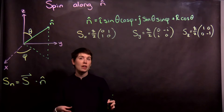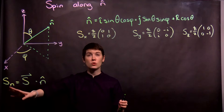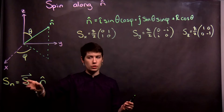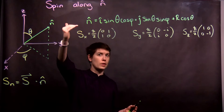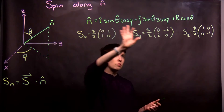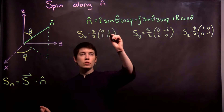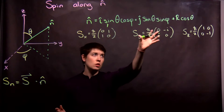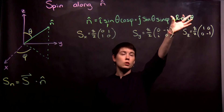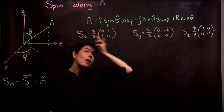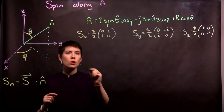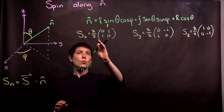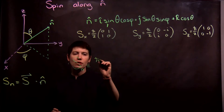This is part two of the video to understand how we can construct our operator to measure spin in a general direction. We need to take the inner product of this matrix of spin vectors with our generalized direction vector. We need our spin matrices in each direction, and then this goes in as we take our dot product. One thing to notice is that each of these terms is going to have an h-bar over two, so that's going to come out up front.